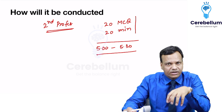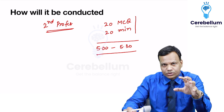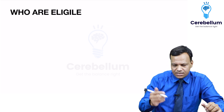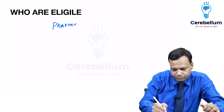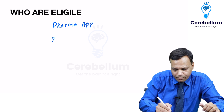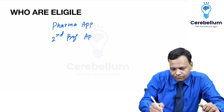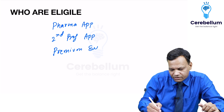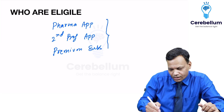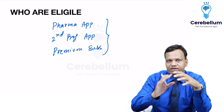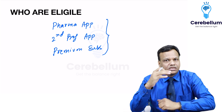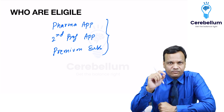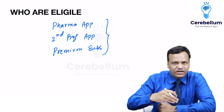That is how it will be conducted — mainly meant for 2nd prof students. Who is eligible to give this test? My Pharma app subscribers, 2nd prof app subscribers, and premium subscribers of our app are eligible. After 5:30 when the test closes, other subscribers can also give the test, but they will not get any rank.